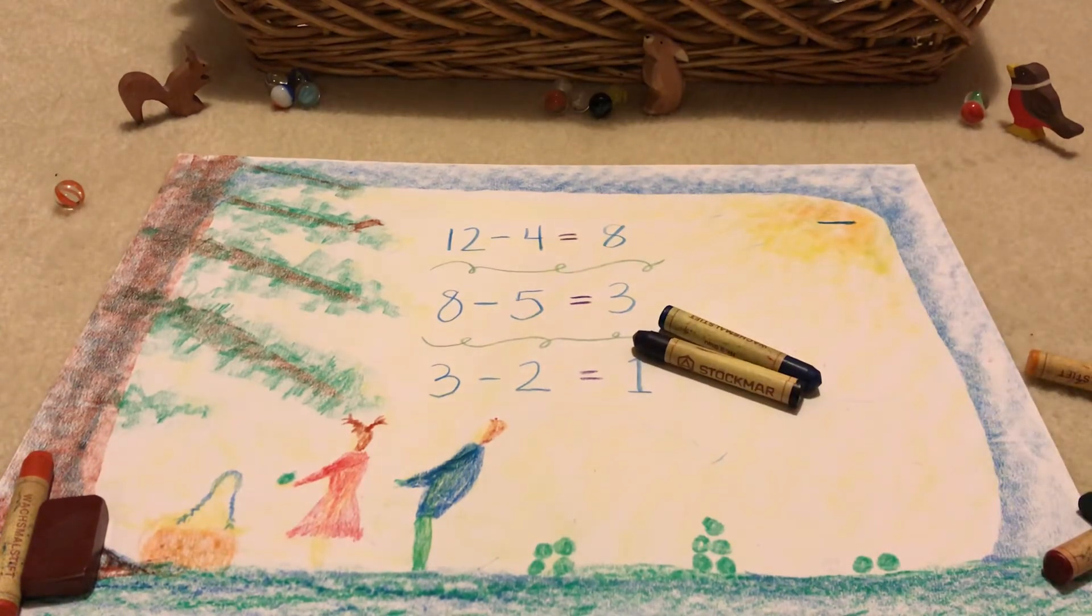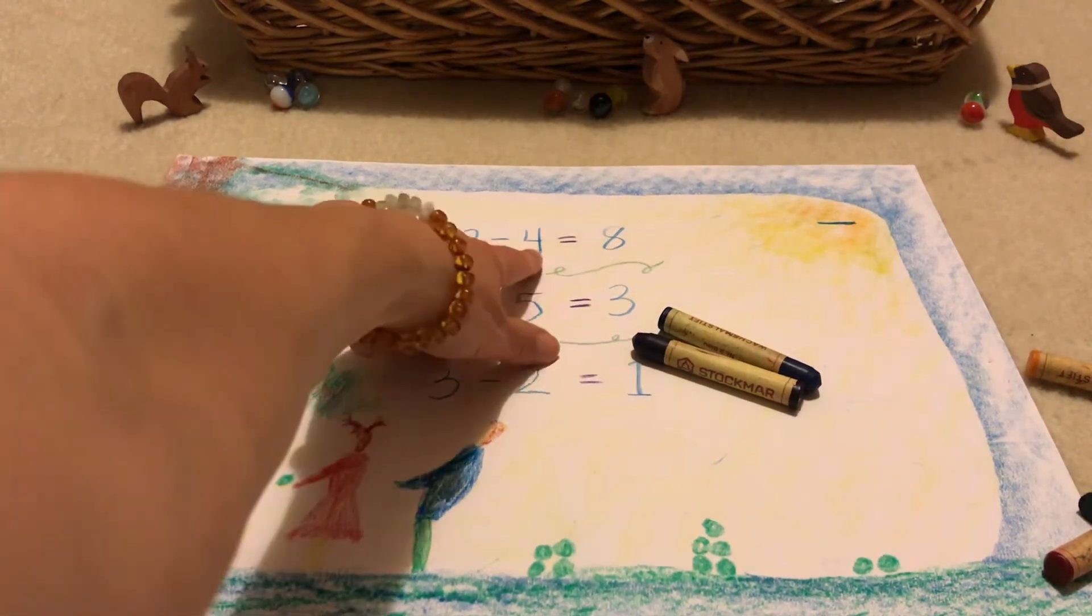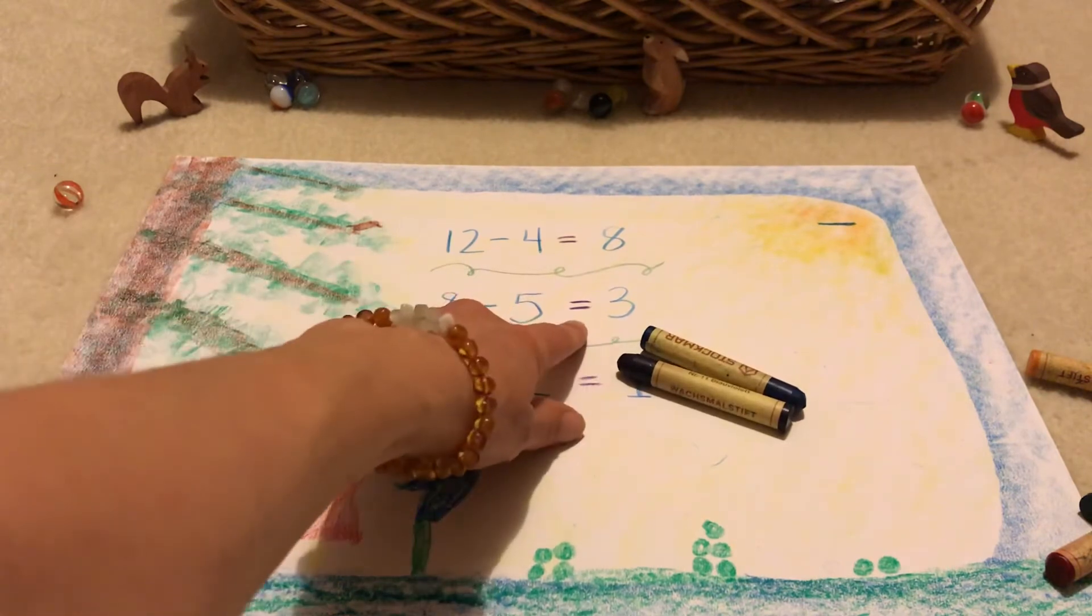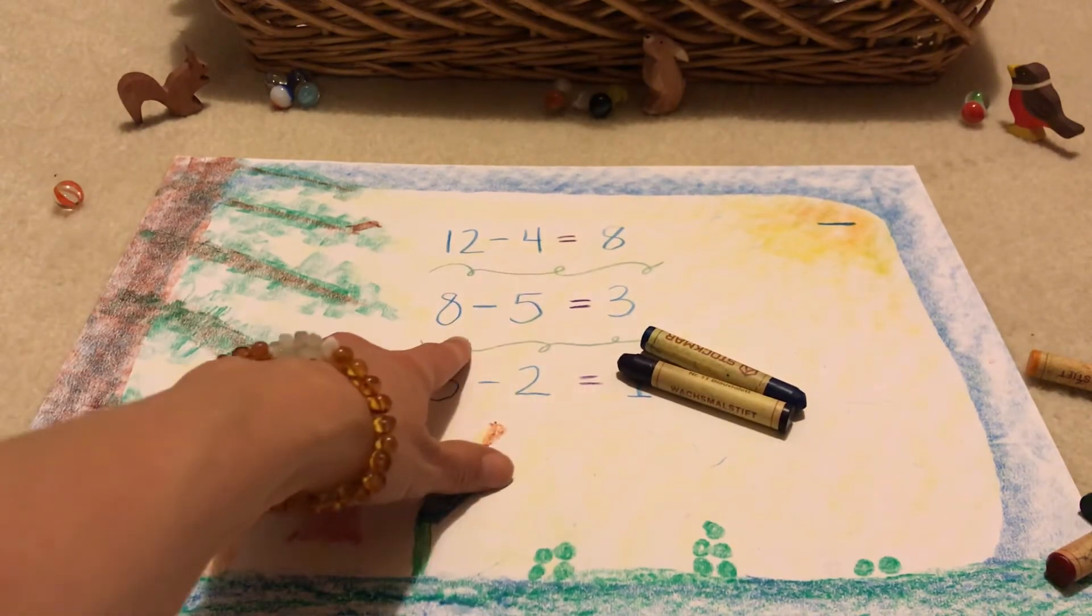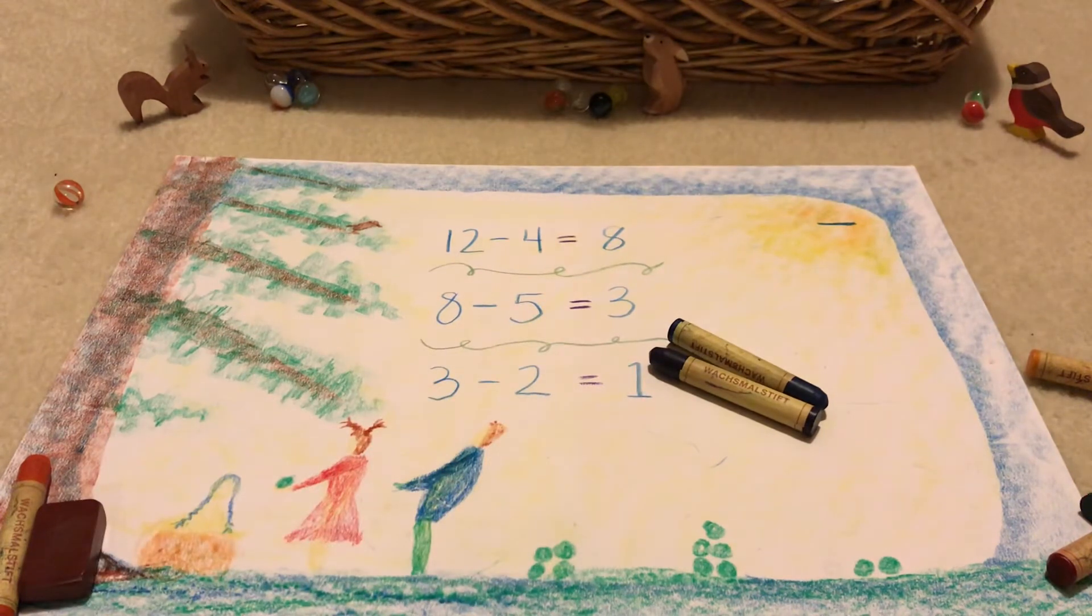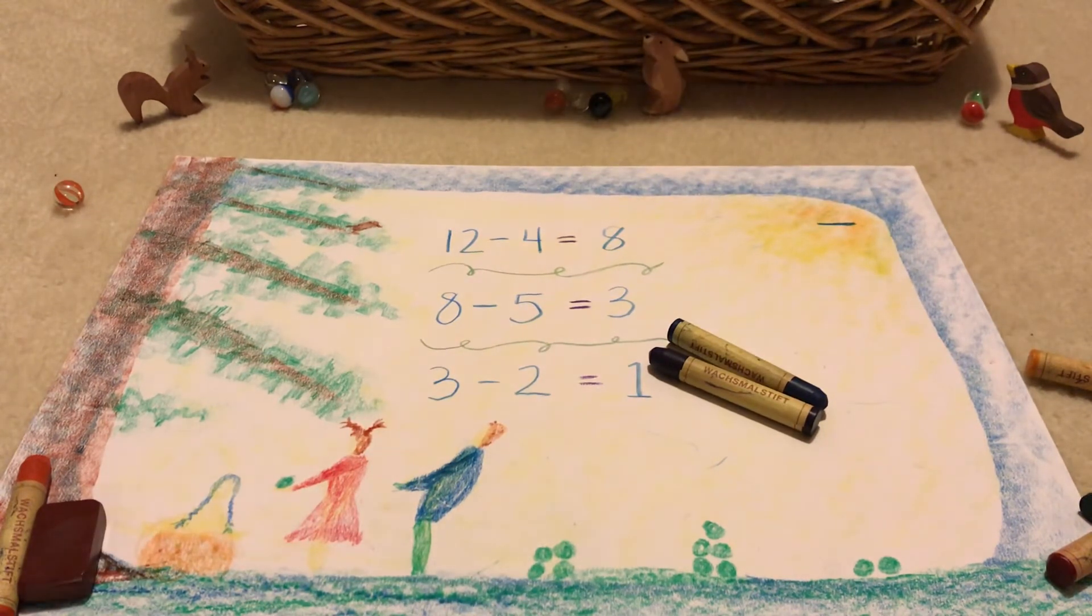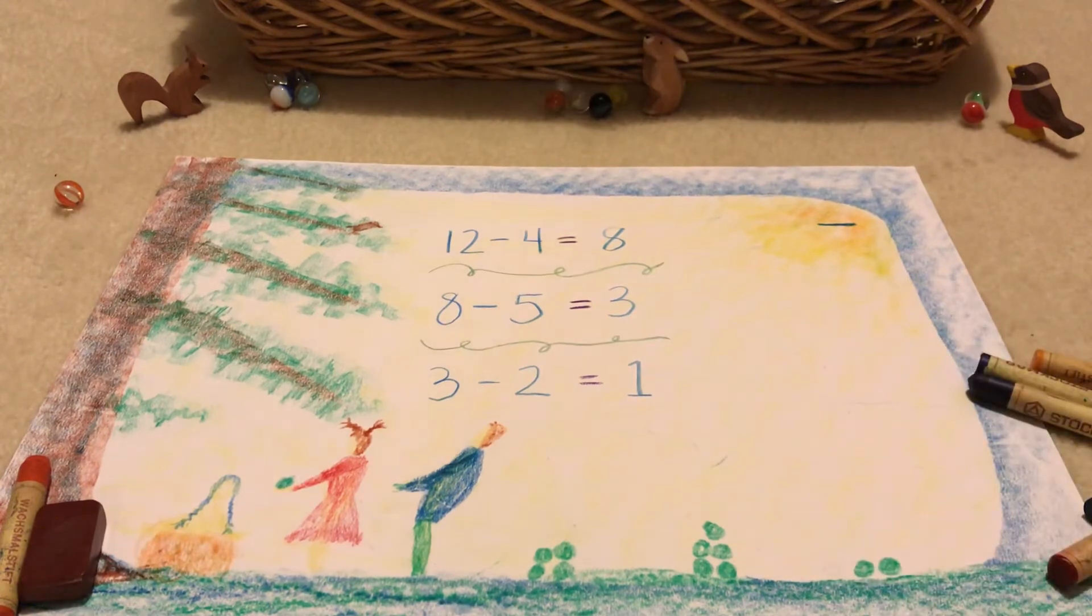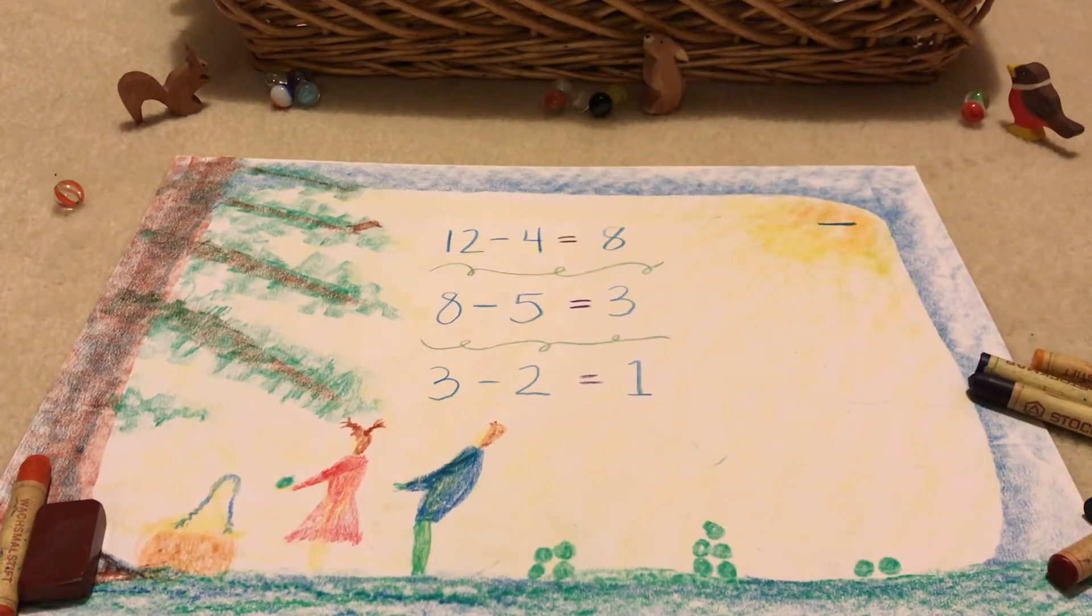Blue or your pencils, so you could use purple and blue here for your numbers and equals. And then a green stick crayon or a green pencil to write out the numbers and the equal sign.